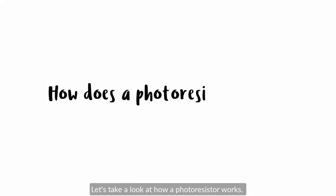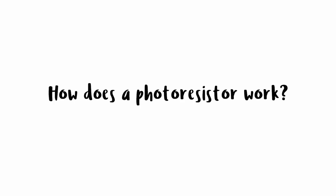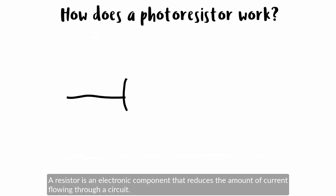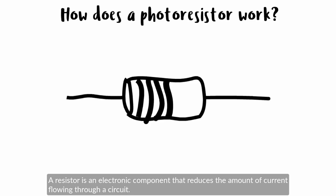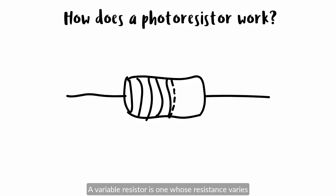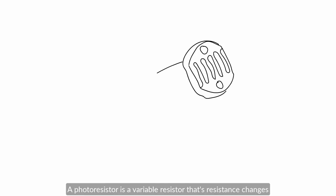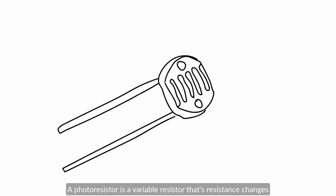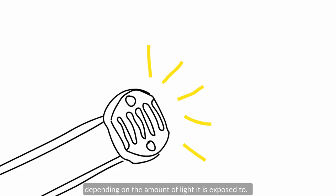Let's take a look at how a photoresistor works. A resistor is an electronic component that reduces the amount of current flowing through a circuit. A variable resistor is one whose resistance varies depending on some condition. A photoresistor is a variable resistor whose resistance changes depending on the amount of light it is exposed to.